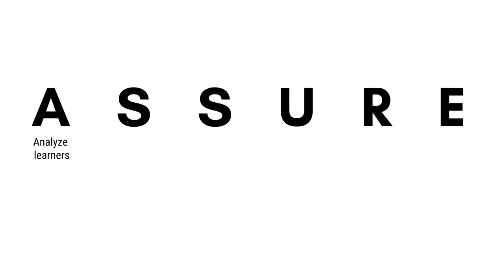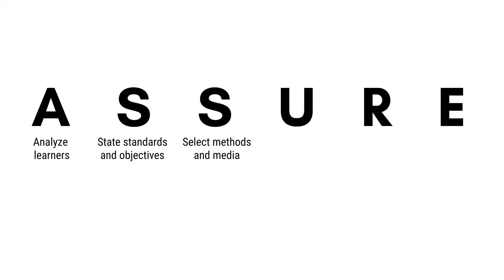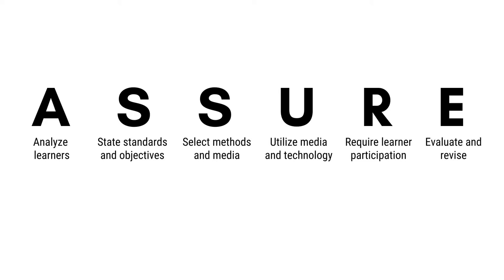In the ASSURE model, A stands for analysis of the needs of the learners. S stands for statement of the standards and objectives. The second S stands for selection of the media and methods. U stands for use of the media and technology. R stands for requiring learner participation and E stands for evaluation and revision.